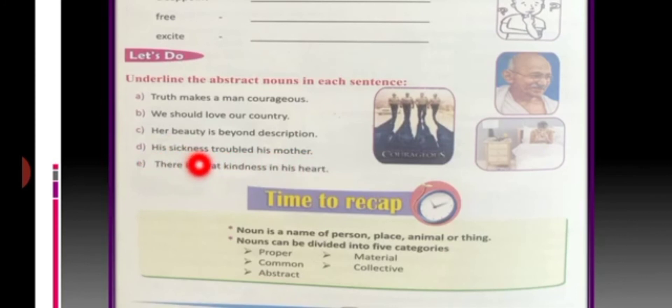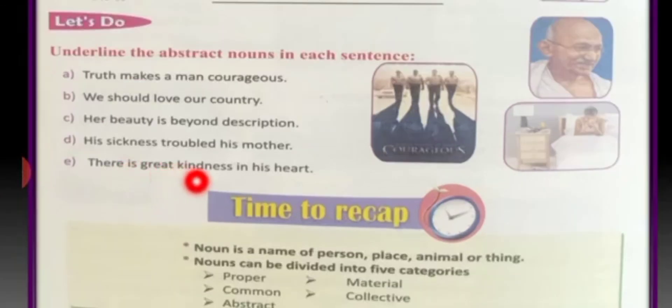His sickness troubled his mother. Now, here the boy is sick but his sickness is the abstract noun which we cannot see. So, underline sickness. E part, there is great kindness in his heart. So, what we can't see is kindness. So, that is abstract noun.